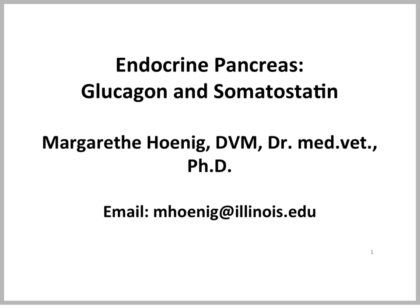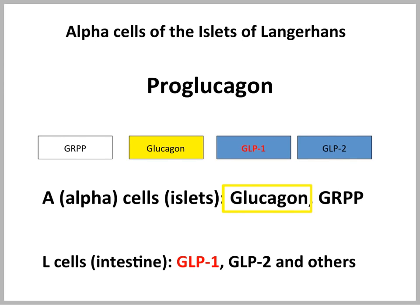This is Dr. Hoenig, and I will talk about glucagon and somatostatin today. Glucagon is secreted from the alpha cells of the islets of Langerhans. The gene is expressed differently in different cells. So in alpha cells, we have production of glucagon and a polypeptide called glucagon-releasing polypeptide. In the L cells of the intestine, we have expression of GLP-1, GLP-2, and other peptides.